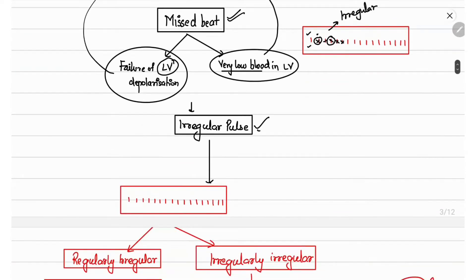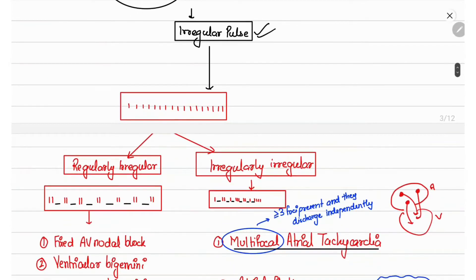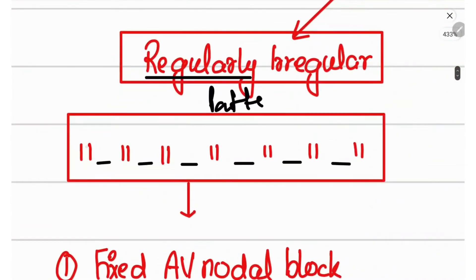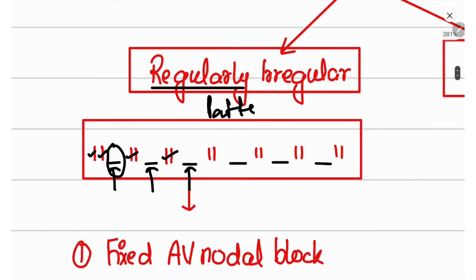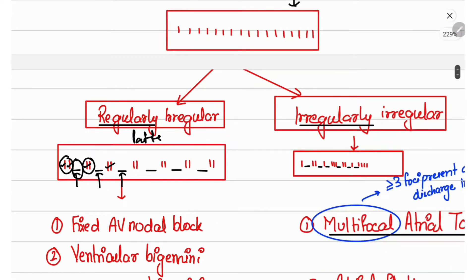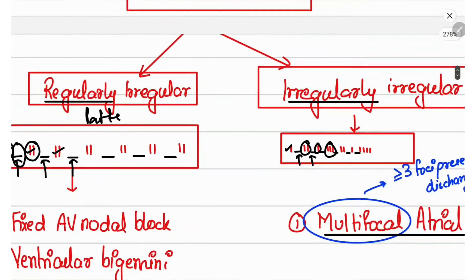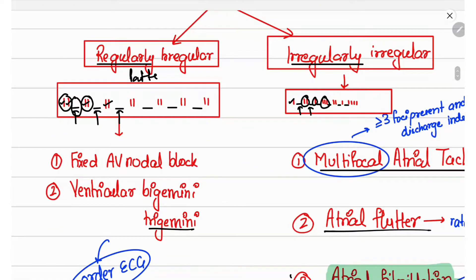Missed beats lead to an irregular pulse, which is of two types: regularly irregular and irregularly irregular. Regularly irregular means there is a pattern of missed beats — for example, one beat, second beat, then a miss, then two beats, then a miss, then two beats, then a miss — so the miss occurs after every two normal pulses. Irregularly irregular means there is no such pattern — for example, one beat, a miss, two beats, a miss, one beat, three beats — no pattern present.